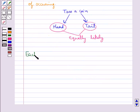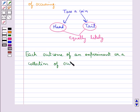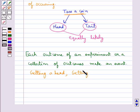Next, the outcome of an experiment or a collection of outcomes make an event. So in the experiment of tossing the coin, getting a head is an event, and getting a tail is also an event. So these are the two events.